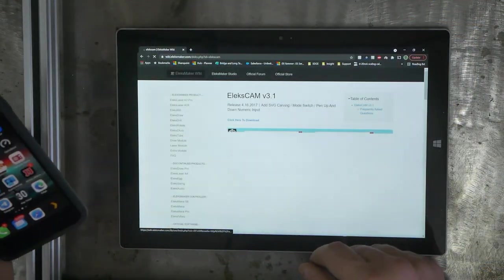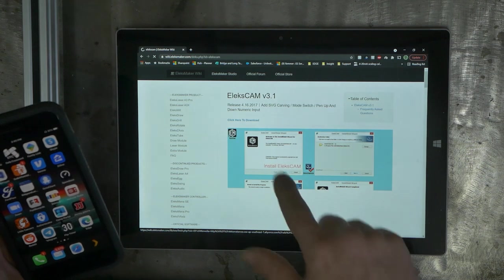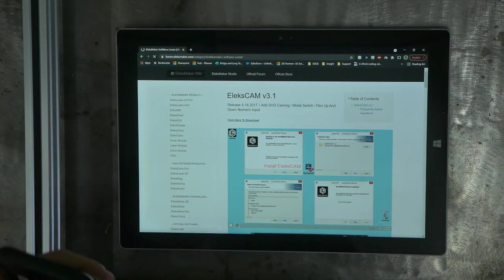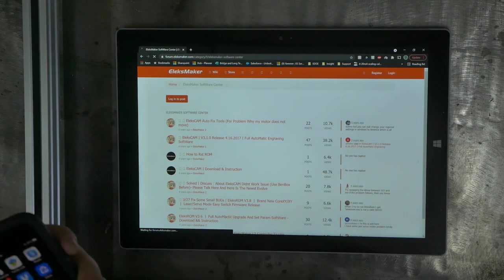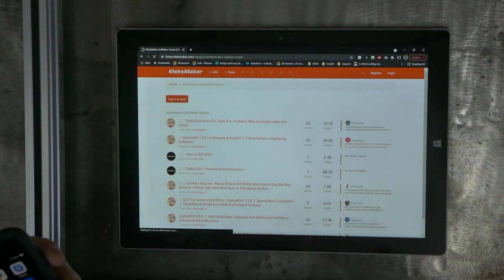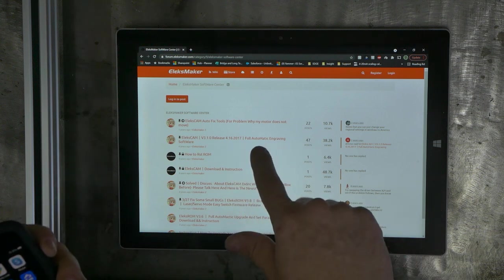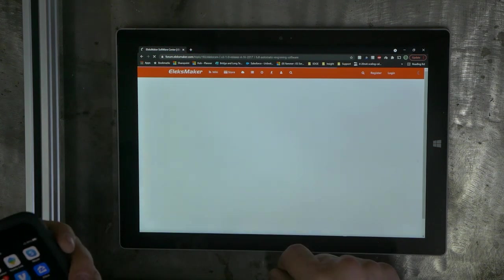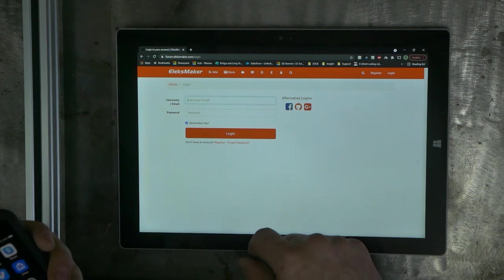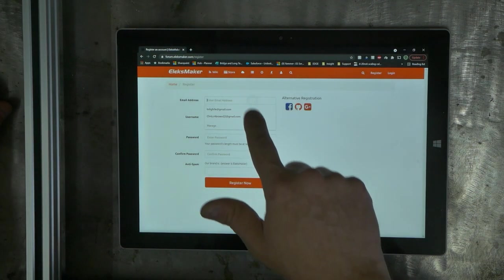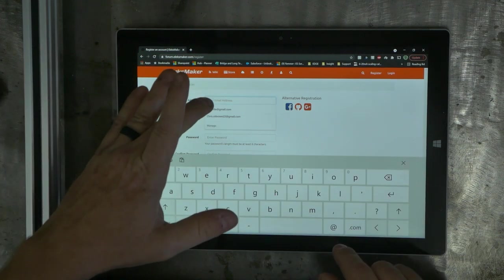The assembly instructions direct you to download the LXCAM software to be able to control the laser. Be aware you won't be able to download the software without first having to register an account with their website. For the life of me I couldn't get Chrome to download the software. I would click the link and then nothing. I actually had to switch to Microsoft Edge in order to be able to download the software.